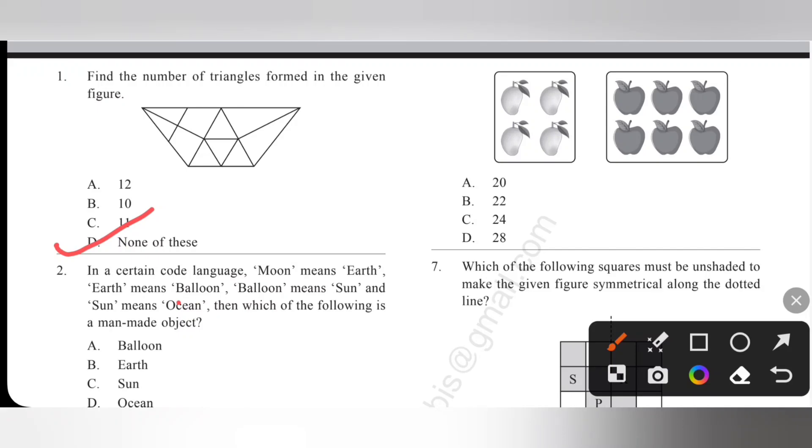Second one, in a certain code language moon means earth, earth means balloon, balloon means sun and sun means ocean. Then which of the following is a man-made object? Actually here balloon is a man-made object. So earth means balloon. Option B is the correct answer. Actually 'means' means we have to look backwards. Balloon is a man-made object, so earth means balloon.